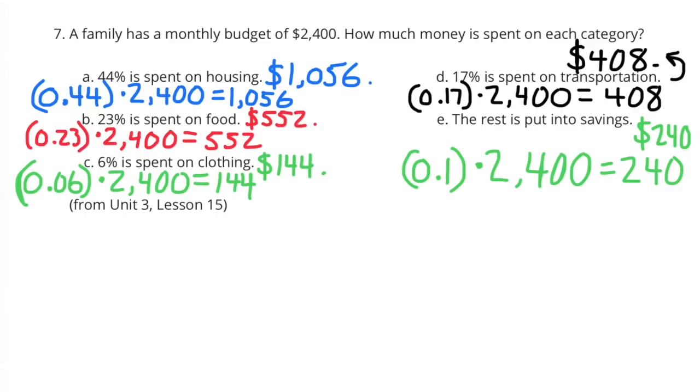A. 44% is spent on housing. 44 hundredths times 2,400 equals 1,056. So they would spend $1,056 on housing.